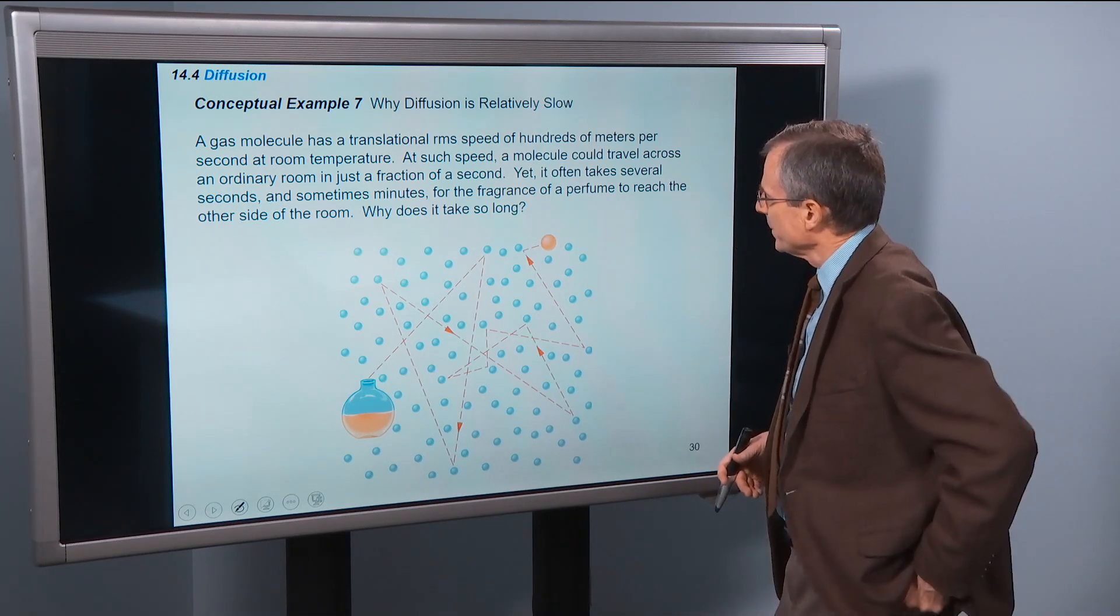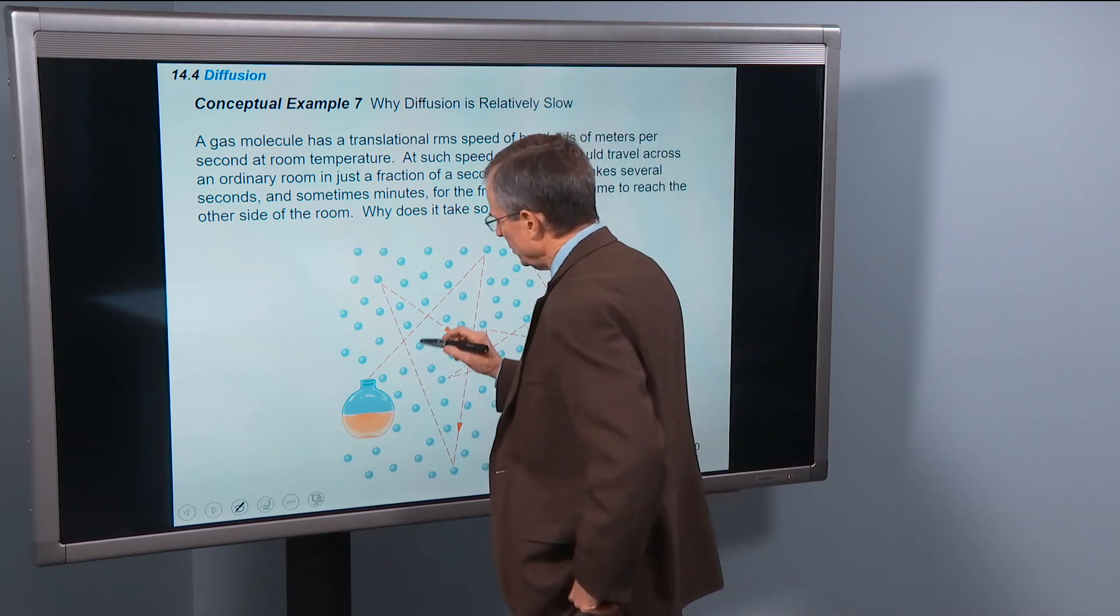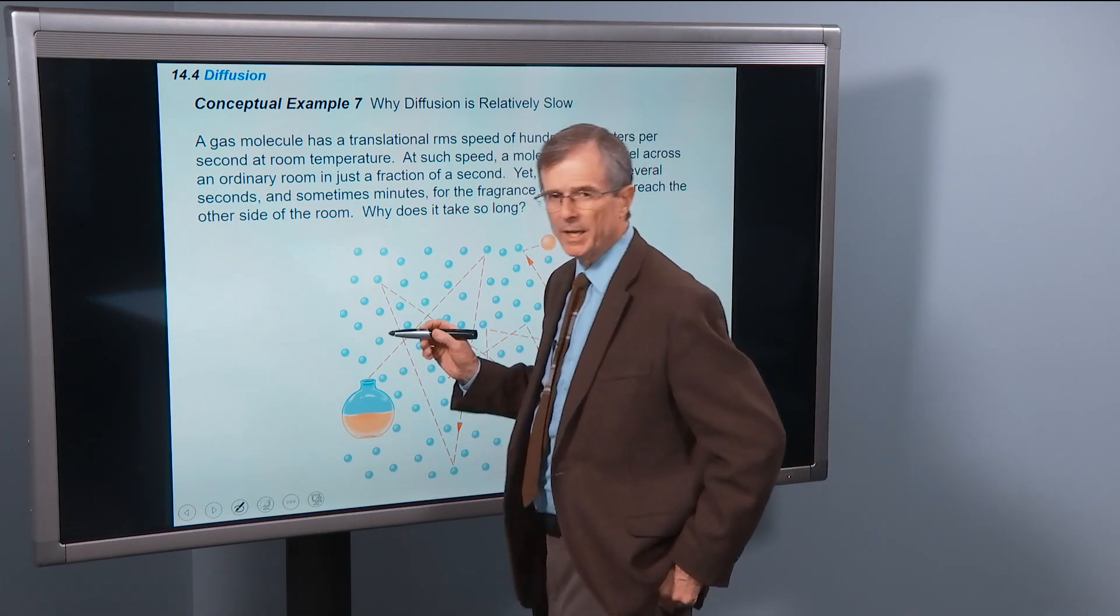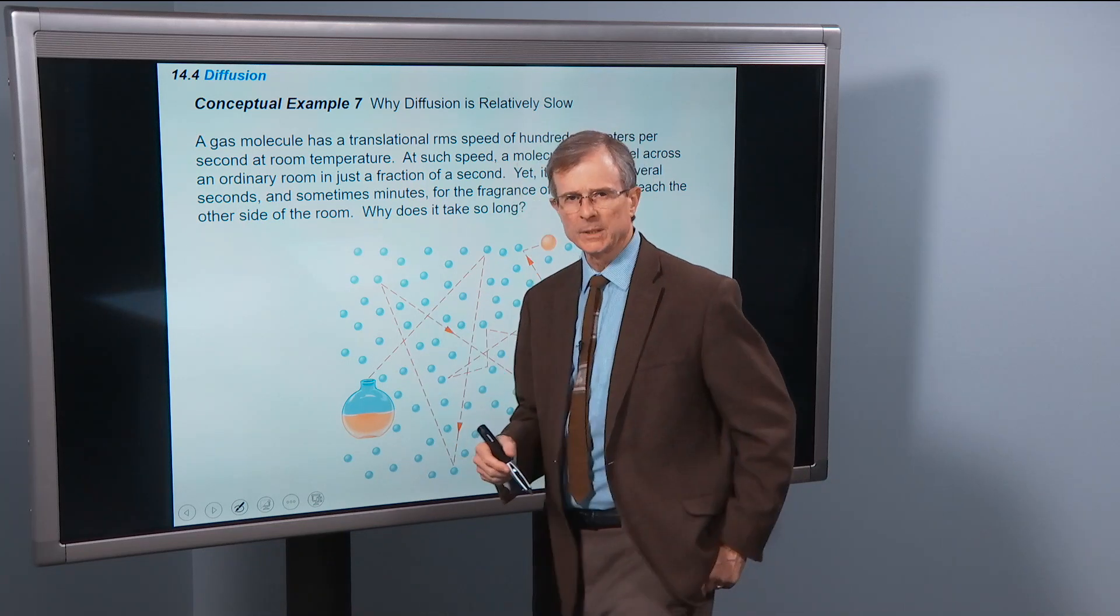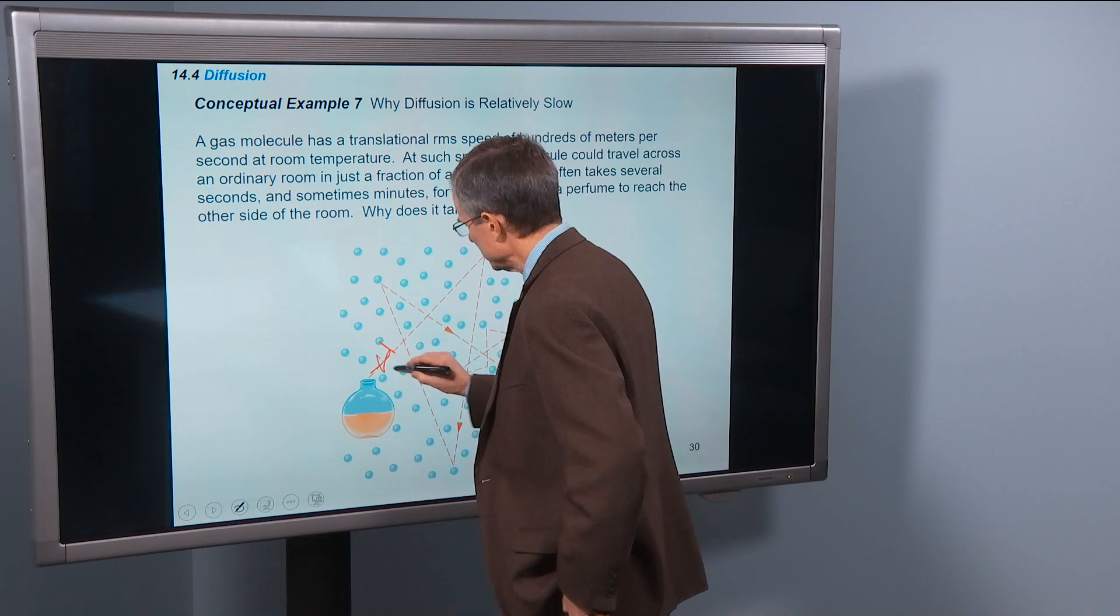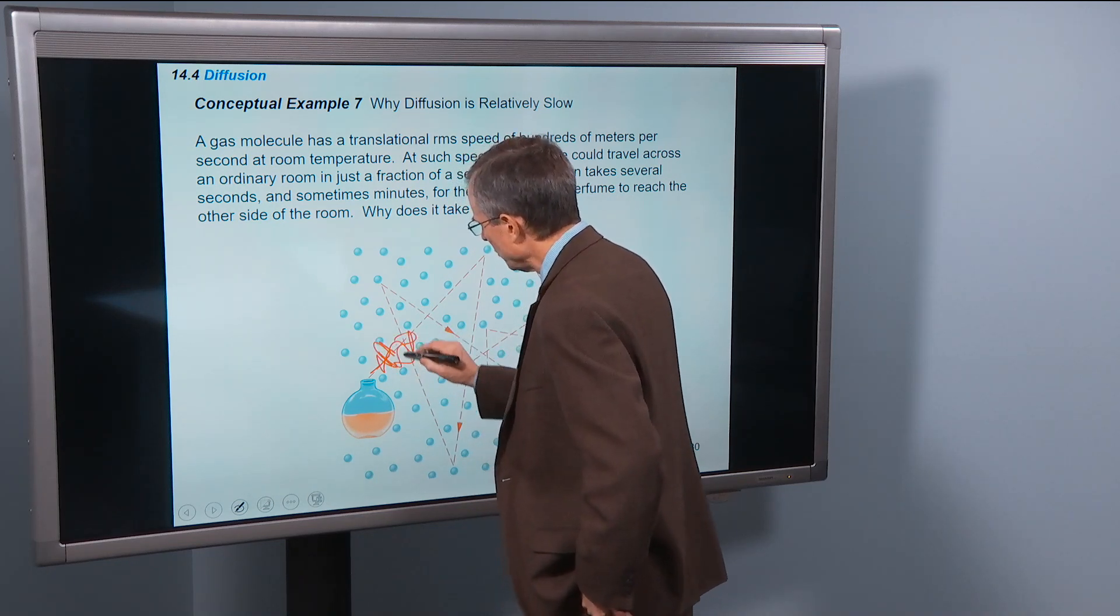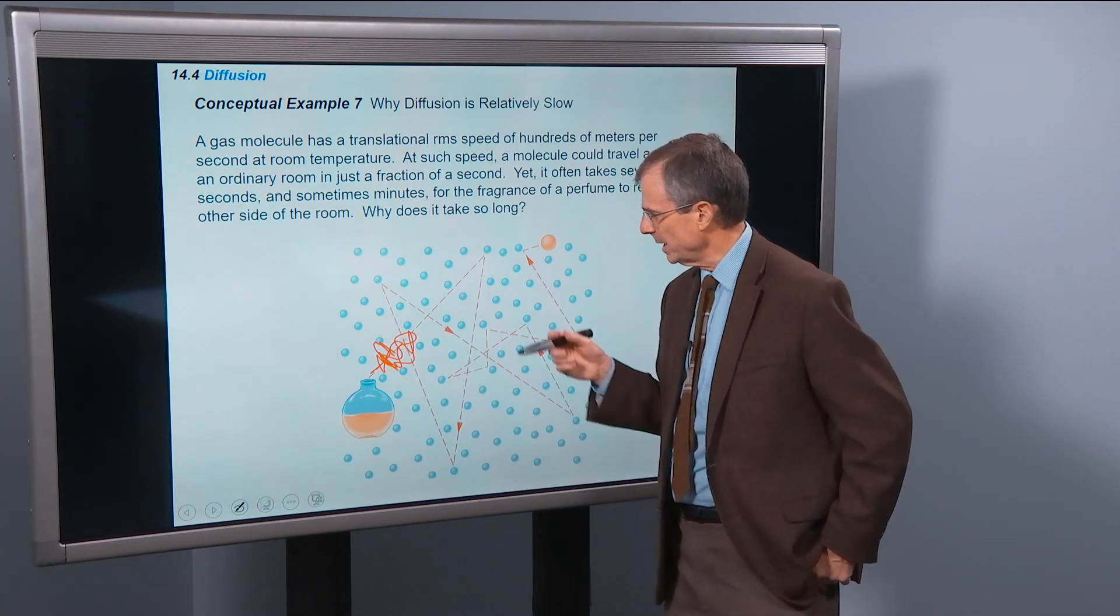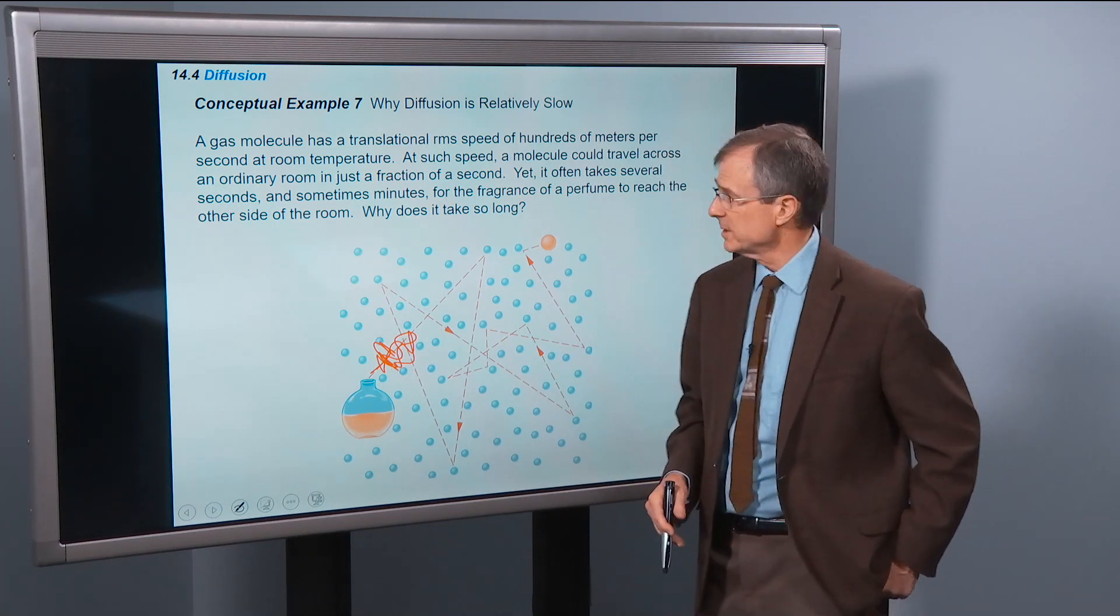Why is that? Well, these molecules, perfume molecules for example, are traveling at extremely high rates of speed, but they're having a lot of collisions with other molecules. So it'll start here, it'll bounce, it'll bounce around. It just takes a while for it to get from here to you because of all these collisions.